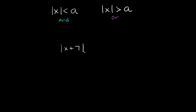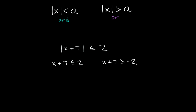Let's start with this first example. We have the absolute value of x plus 7 is less than or equal to positive 2. To solve this inequality, the first thing you have to do is split it up into two different inequalities. The first one is just how it is but drop the absolute value bars: x plus 7 is less than or equal to positive 2. Then you write another one where you flip the sign and make your number negative: x plus 7 is greater than or equal to negative 2.